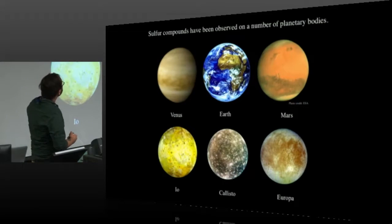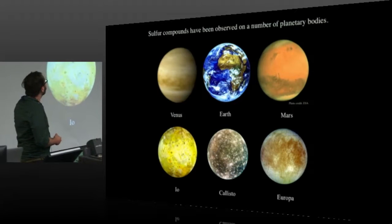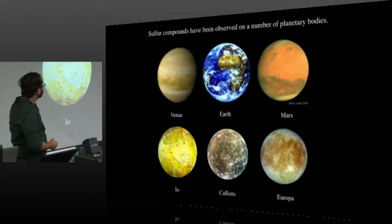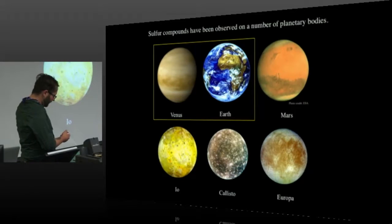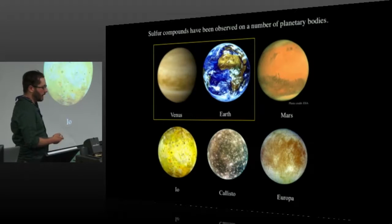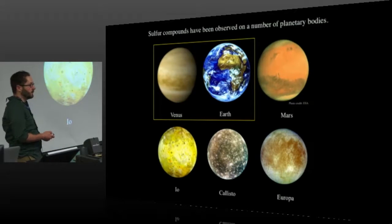Just to give you some background about why we care about sulfur, sulfur has been observed in a number of planetary bodies, including a number of the rocky planets as well as some moons, Jovian moons. I'll be focusing on Venus and Earth and the implications there.